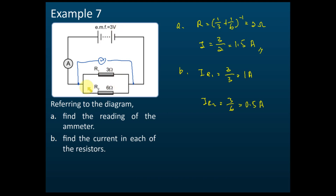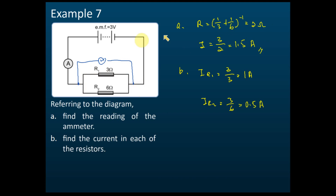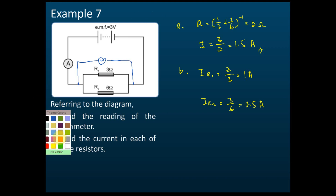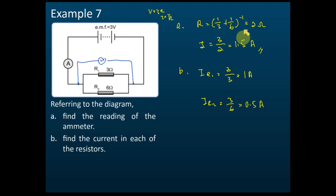For these two points, the potential difference is 3 volts. Now for the resistance between these two points — this is a parallel circuit — the resistance can be found using this equation: R equals 1 over 3 plus 1 over 6, which equals 2 ohms. So the resistance between these two points is 2 ohms and the potential difference is 3 volts, so I equals V over R.